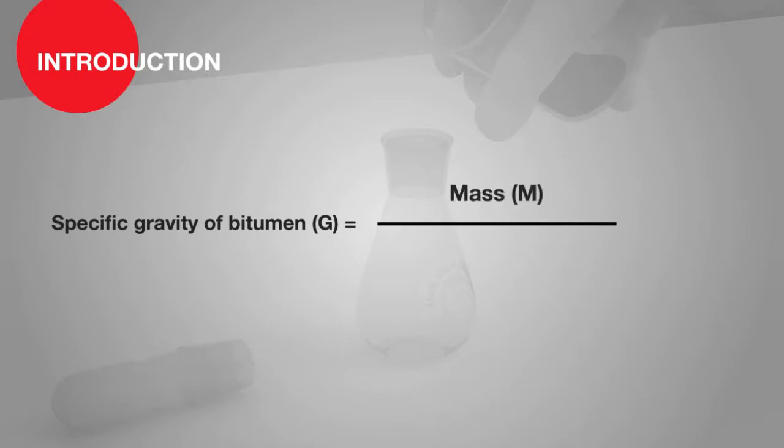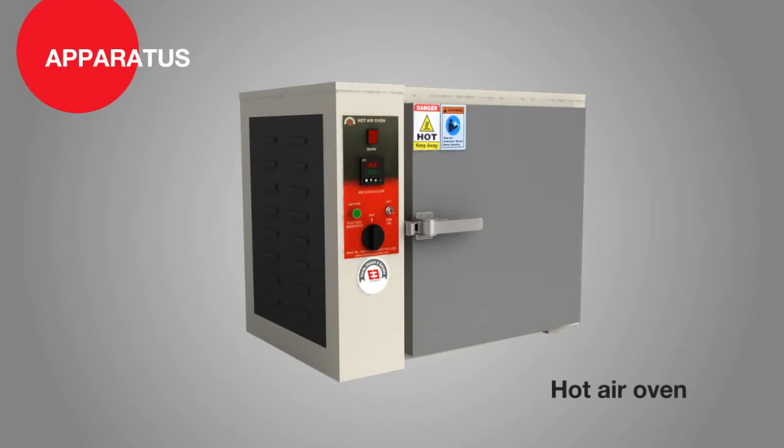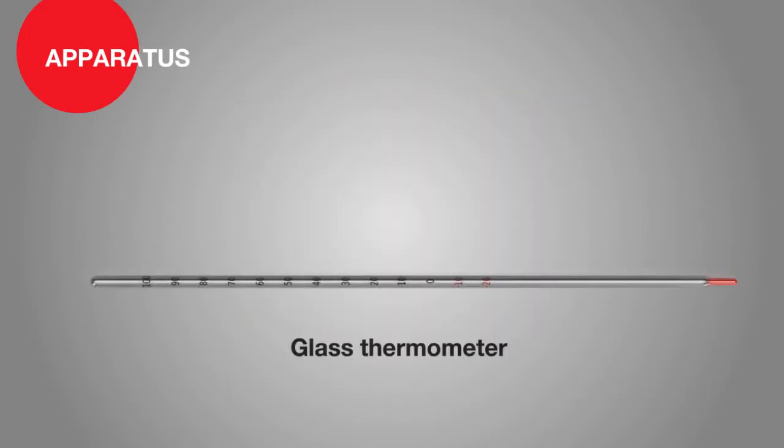The apparatus consists of a specific gravity bottle of 50 ml capacity, wide mouth, and having neck diameter of 25 mm approximately, hot air oven, glass thermometer having least count of 0.1 degree Celsius, and an electronic balance of 200 gram capacity with least count of 0.001 grams.